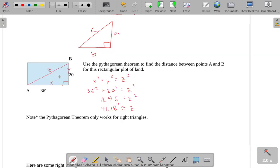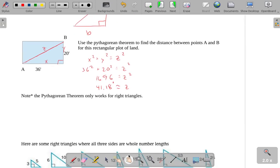Z is approximately equal to 41.18. So that distance there would be approximately 41 feet. A little over 41. Almost 41 and a quarter feet.